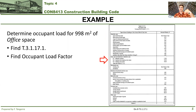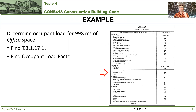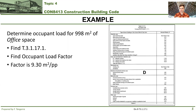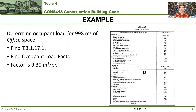We have to look on the left-hand side of the table and figure out which row we're in. Where does office space fall? If you remember your topic 2 and you're using Appendix A correctly, you know it's one of the occupancies A through F. Specifically in our case, it's D occupancy - business and personal use. So you look at that row in the table. In that row, we have two choices: personal services, shops, and offices. We pick offices, because that's what we're being asked to evaluate. The factor from that table is 9.30 meters squared per person, where person is shown as PP.